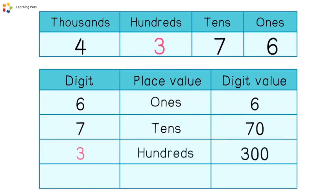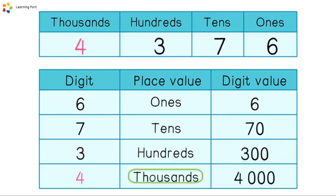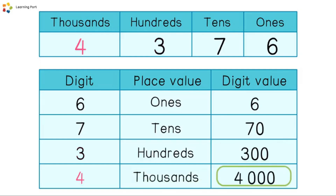Digit three: place value is hundreds, and digit value is three hundred. Digit four: place value is thousands, and digit value is four thousand.